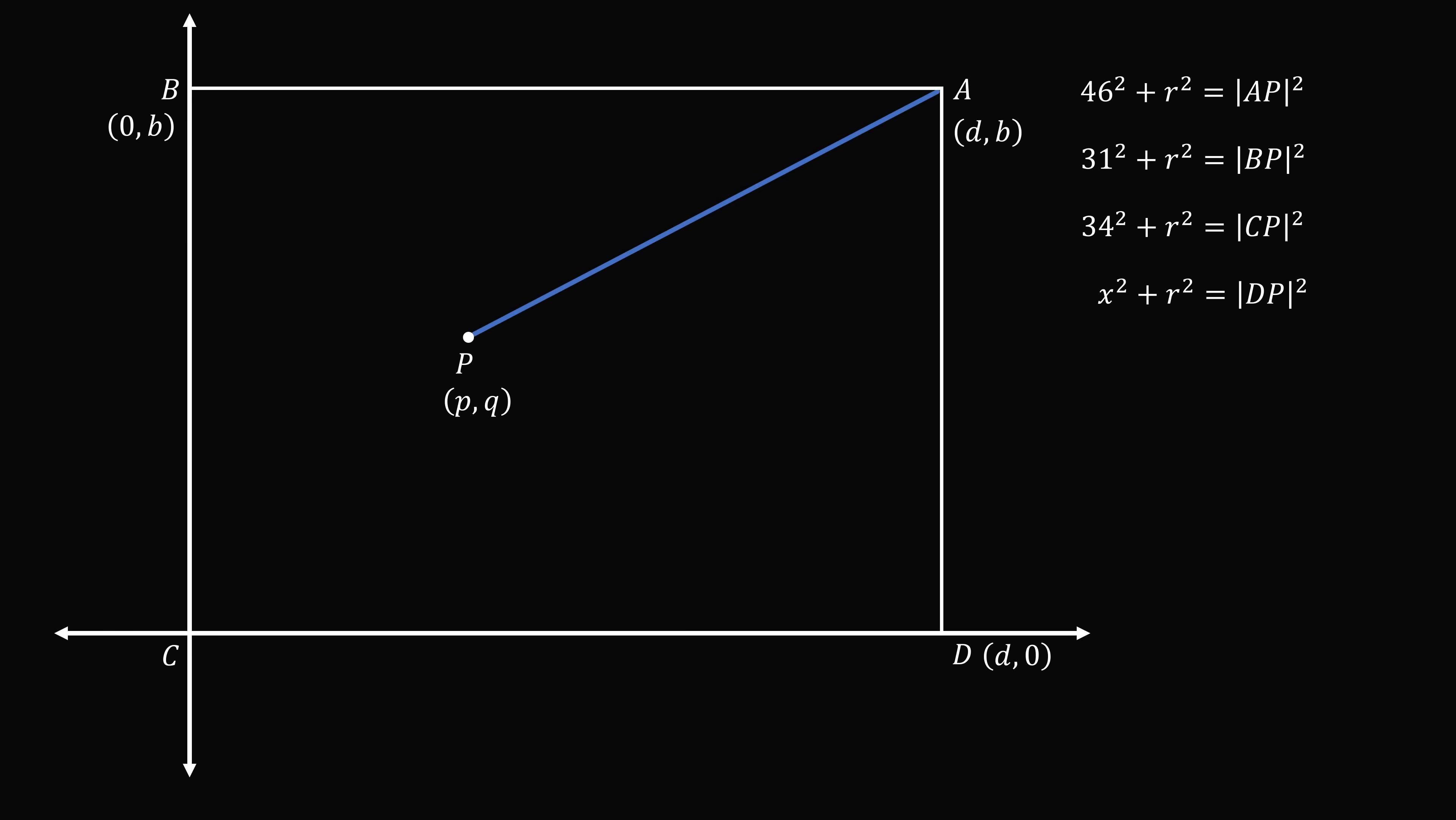Now construct AP. Let's calculate the squared distance of AP. We can do the square of the distance formula to get that this is equal to the square of (d minus p) plus the square of (b minus q).